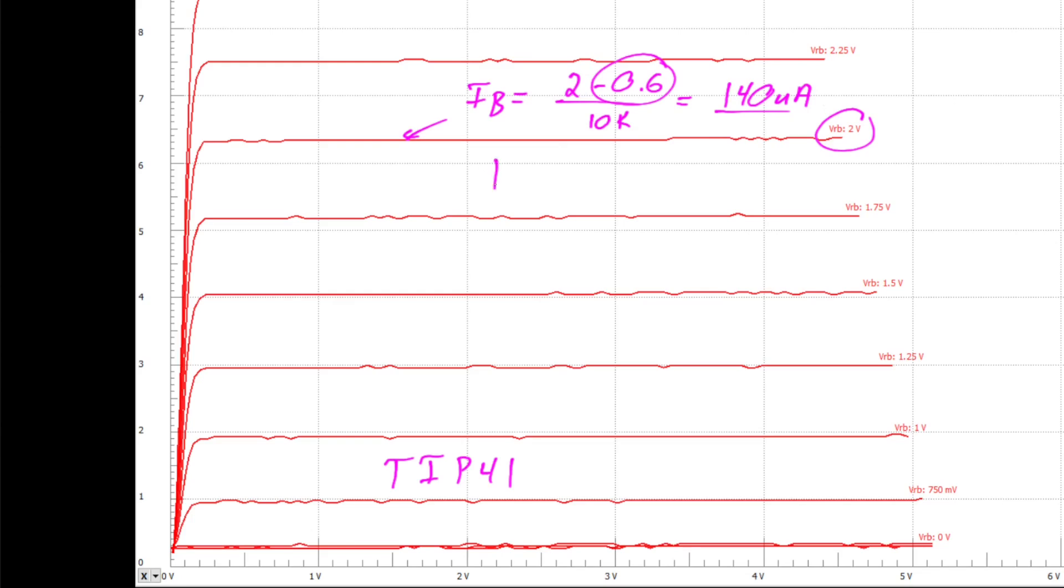Our resulting estimate for transistor beta, that's the DC current gain, collector current divided by base current, is in this case about 6.3 milliamps. So that's 6.3 milliamps over 140 microamps. So the DC current gain for the TIP41 transistor is approximately 45.